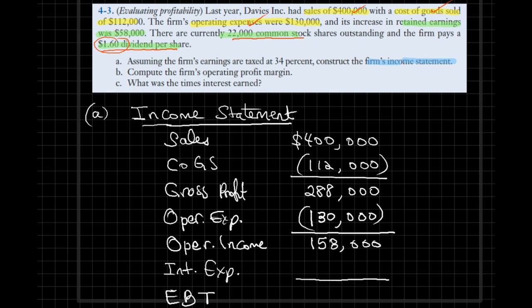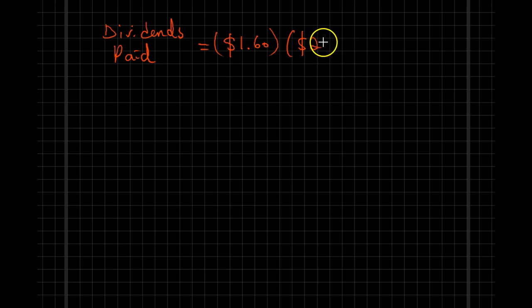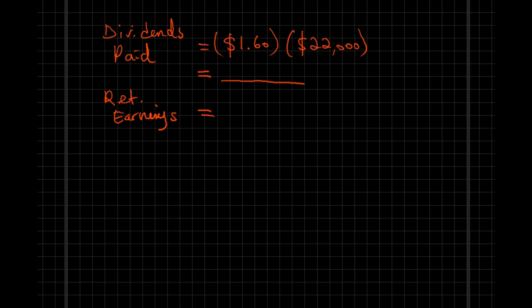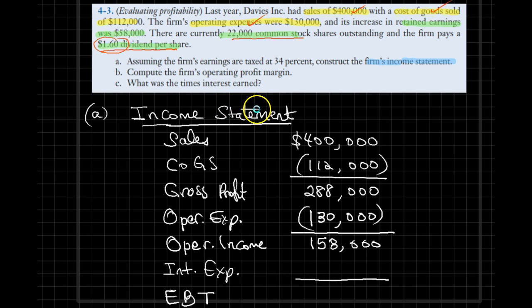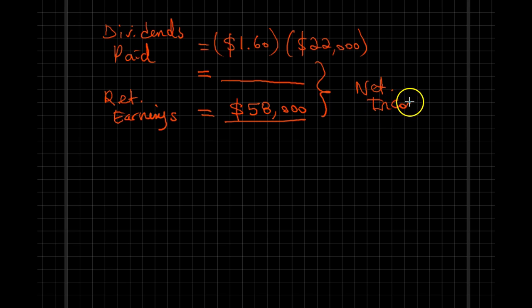Let me open a new page and do some additional calculations. Total dividends paid equals dividends per share times shares outstanding. Dividends per share is $1.60 and we have 22,000 shares outstanding. Once we have dividends paid, and knowing that retained earnings is $58,000, those two figures added together will give us net income.